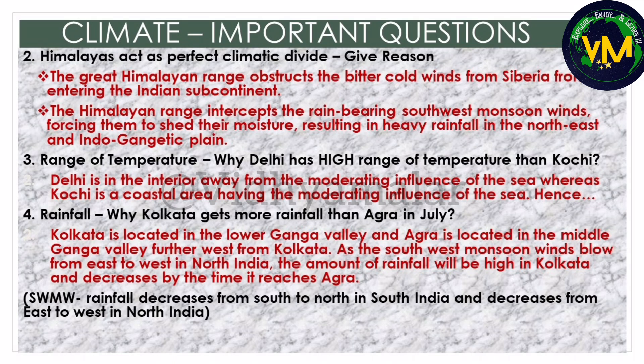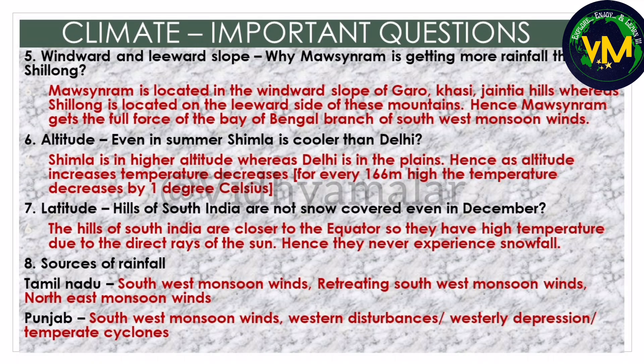For rainfall-related questions, say for example why Kolkata gets more rainfall than Agra. When it is North India, the Southwest monsoon wind will decrease from South to North, whereas in South India the rainfall will decrease from East to West. Kolkata is in the East in the lower Ganga Valley, whereas Agra is more towards the West in the middle Ganga Valley. So in North India, rainfall decreases from East to West, which is why Kolkata gets more rainfall than Agra. Also, don't forget to write the name of the wind - in this case, it is the Bay of Bengal branch of Southwest monsoon wind.